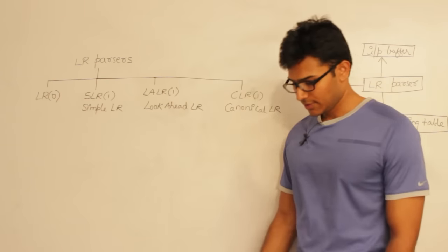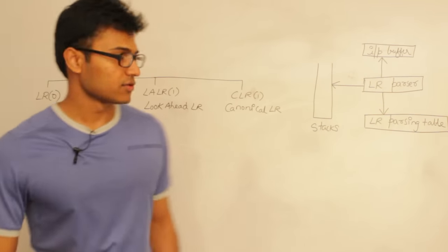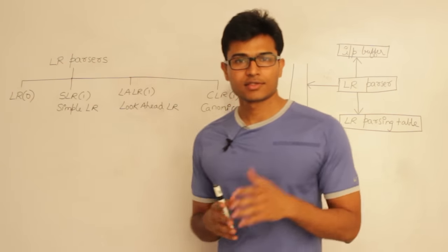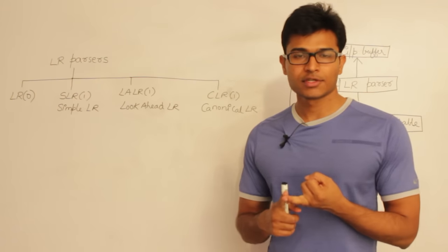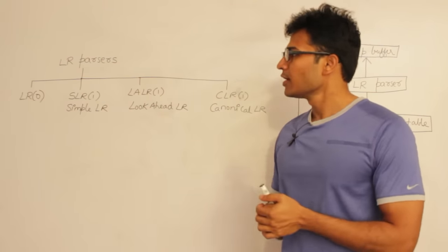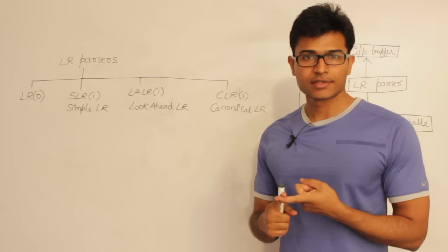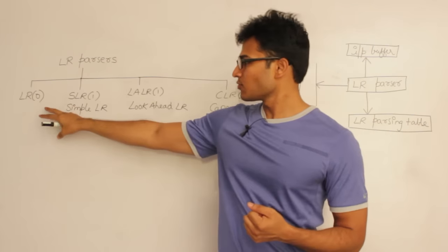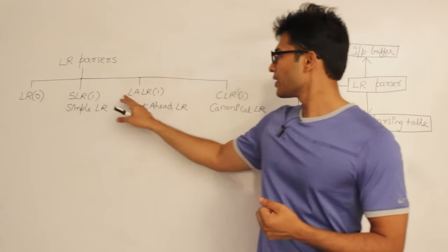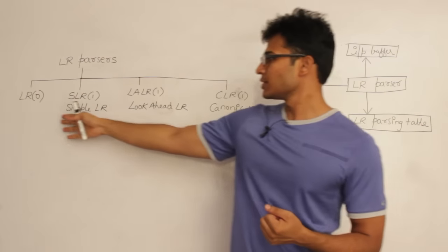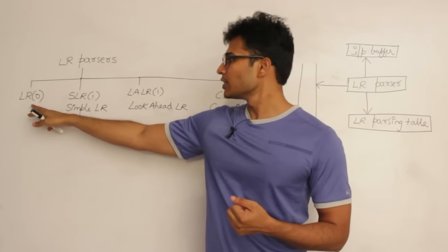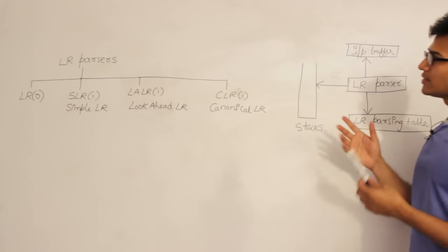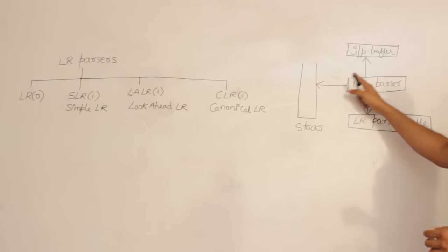Let's see the LR parsers. LR parsers are of four types: LR0, SLR1, LALR1, and CLR1. LR parsing is also a type of bottom-up parsing. We have seen top-down parsers like LL1 and recursive descent. Bottom-up parsers include the operator precedence parser and the LR parsers. These four types are in ascending order of power — least powerful is LR0 and most powerful is CLR1.